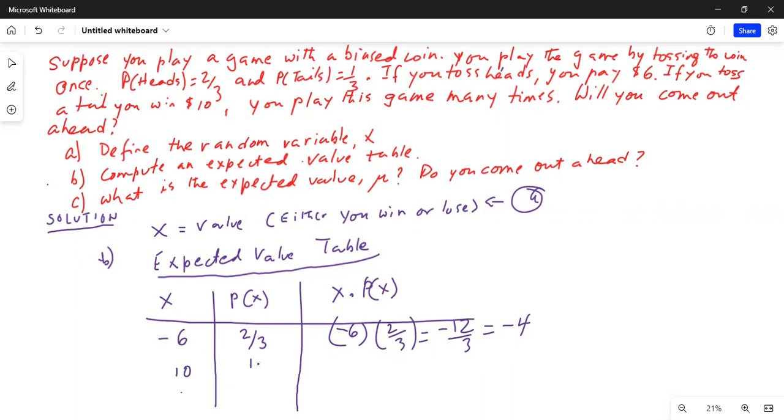And if you toss tail, you win ten dollars. And what is the probability of that is one-third. So 10 times one-third is equal to 10 by 3.